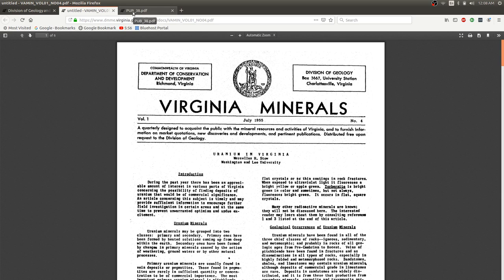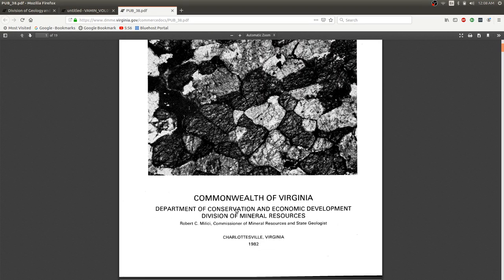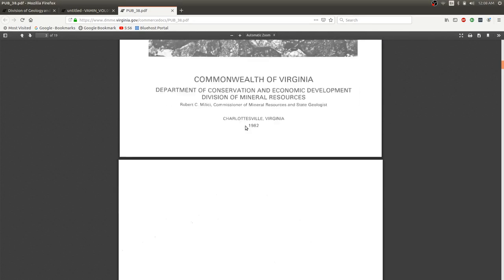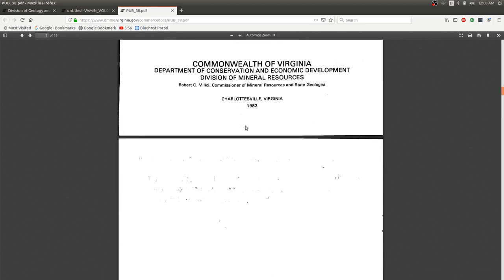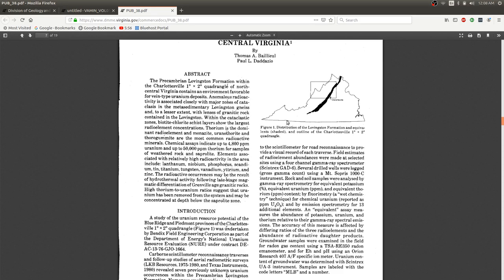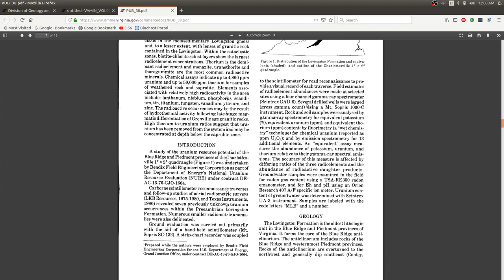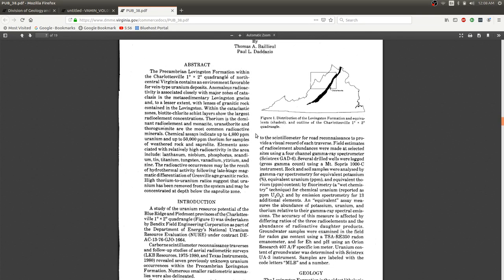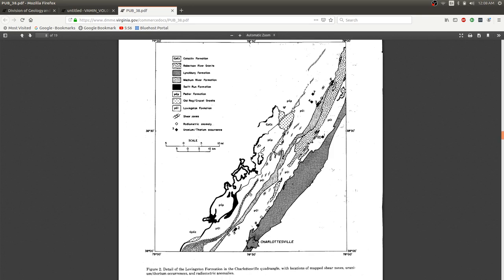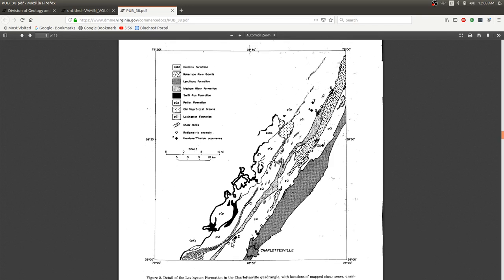Then the next paper I found was written quite a bit later, in 1982, and it focuses on the area around Charlottesville, and it says that a more detailed airborne survey was carried out. So instead of 10 kilometers between the survey lines, there were close to like a half of a kilometer. So a lot more detailed. And based on that, they found some areas around Charlottesville with significantly higher than the normal background radiation levels.